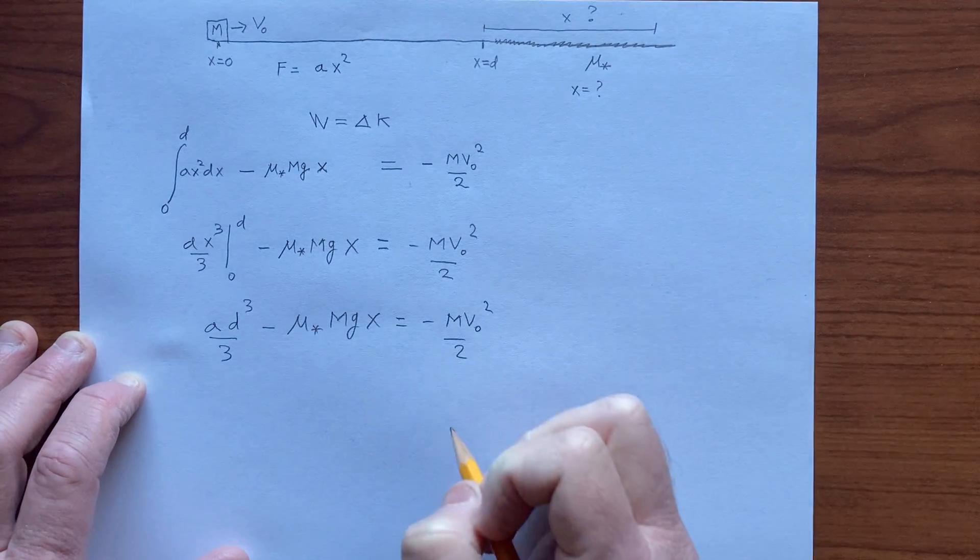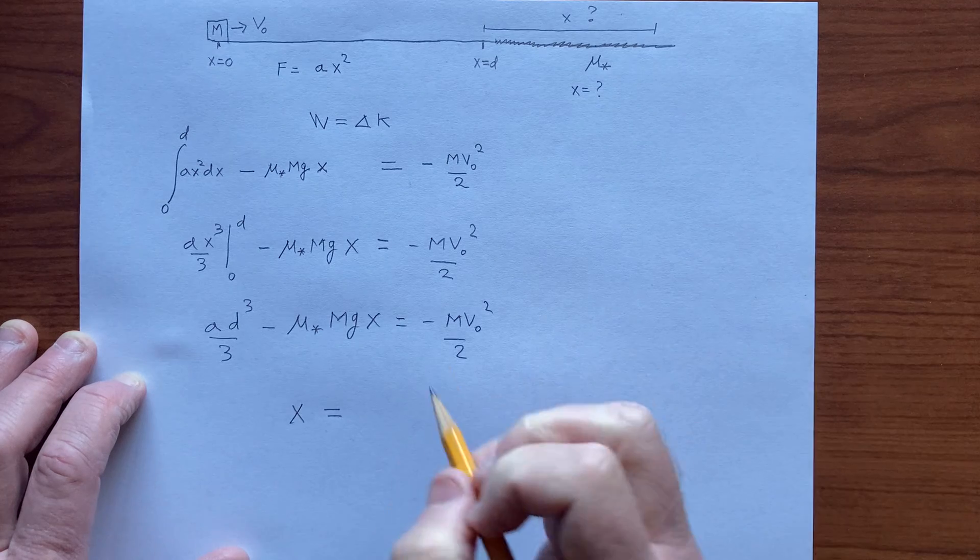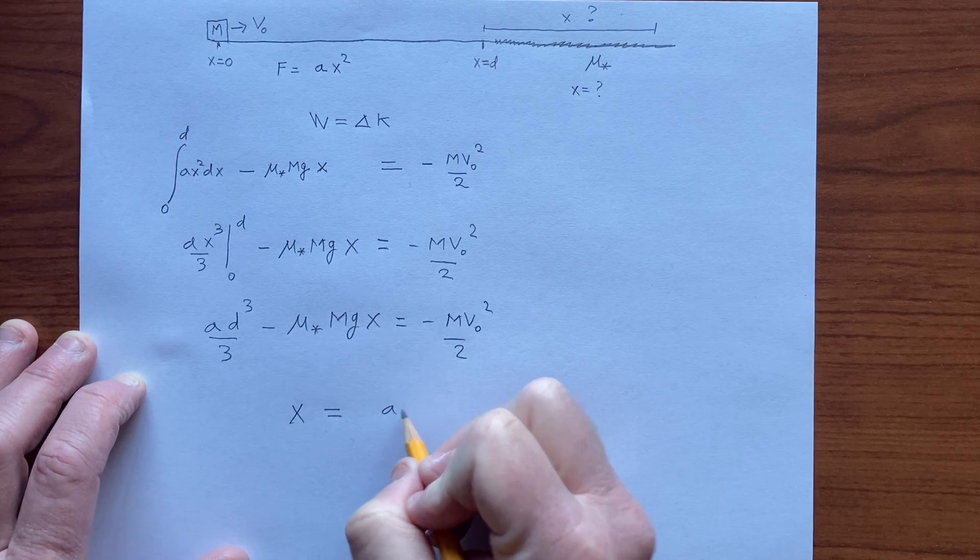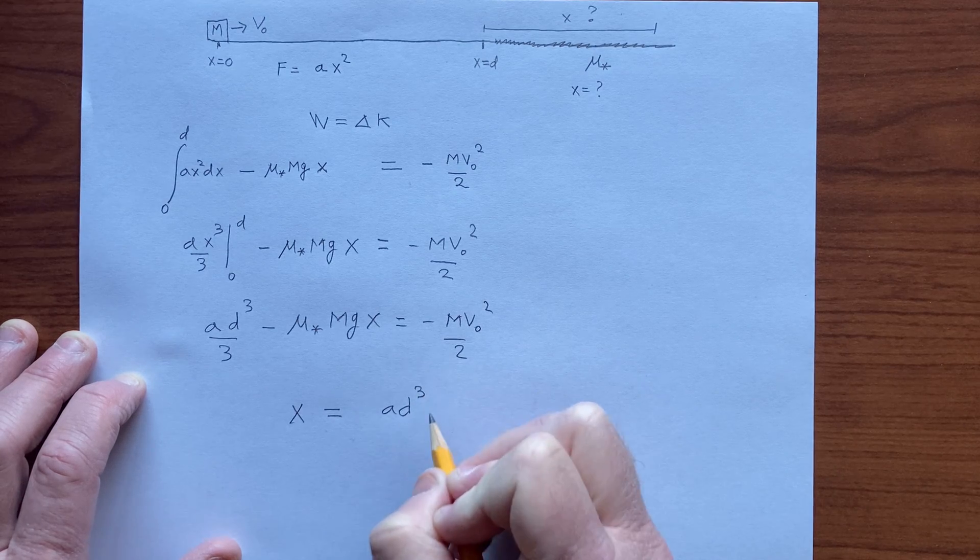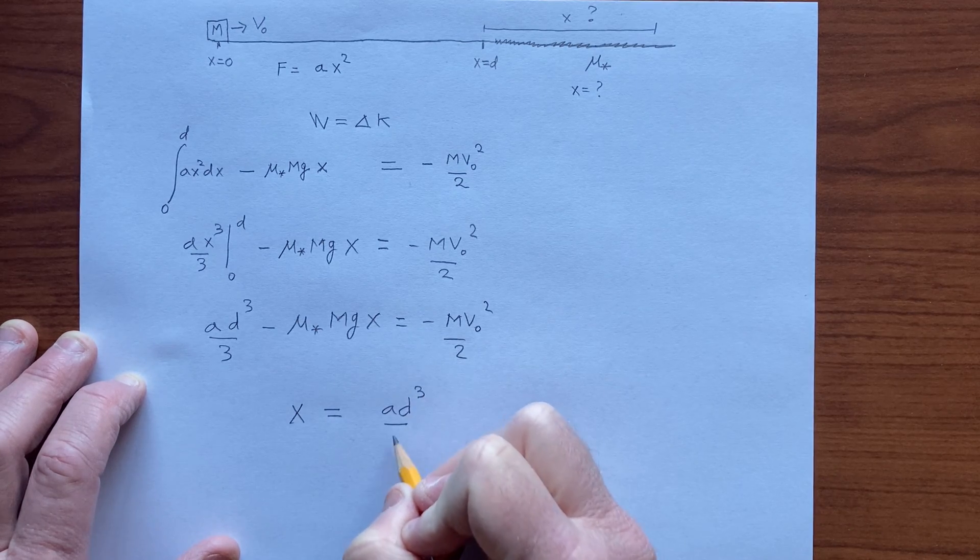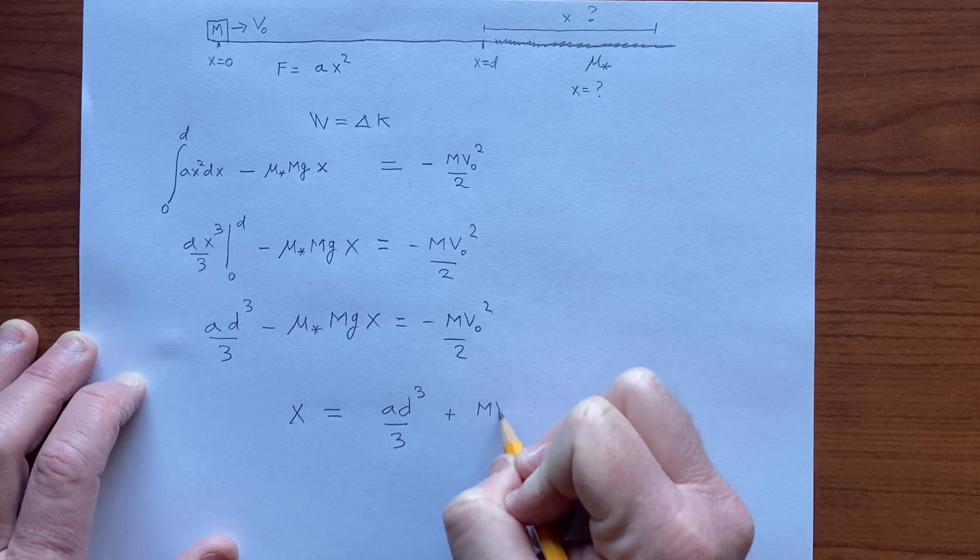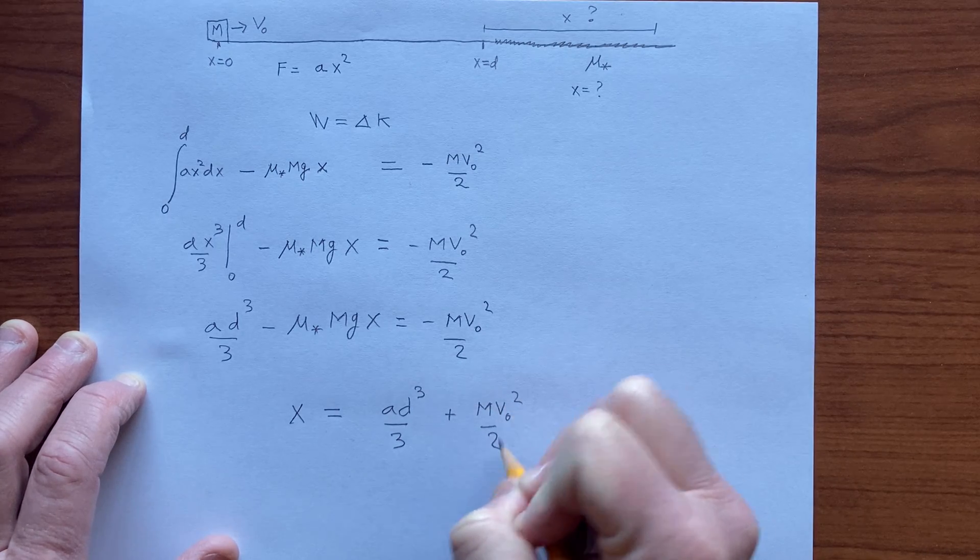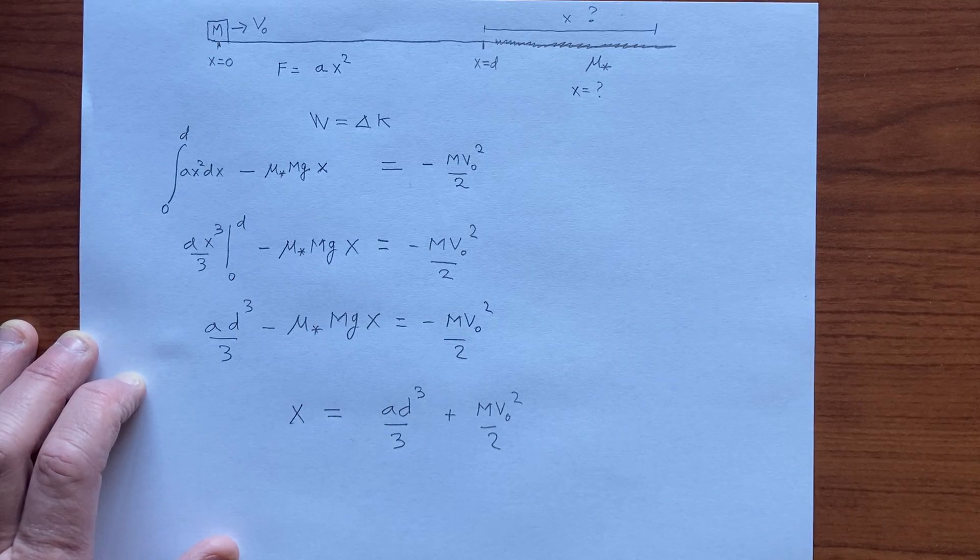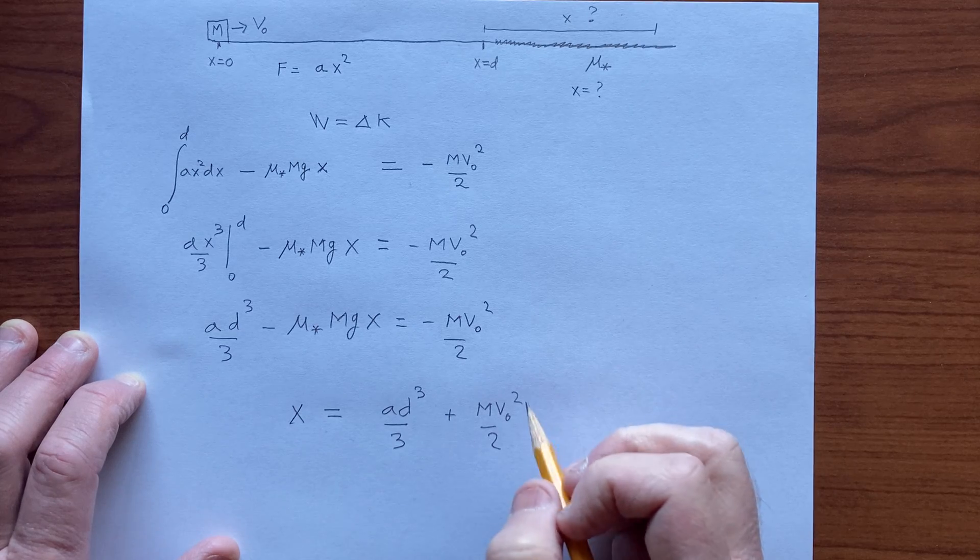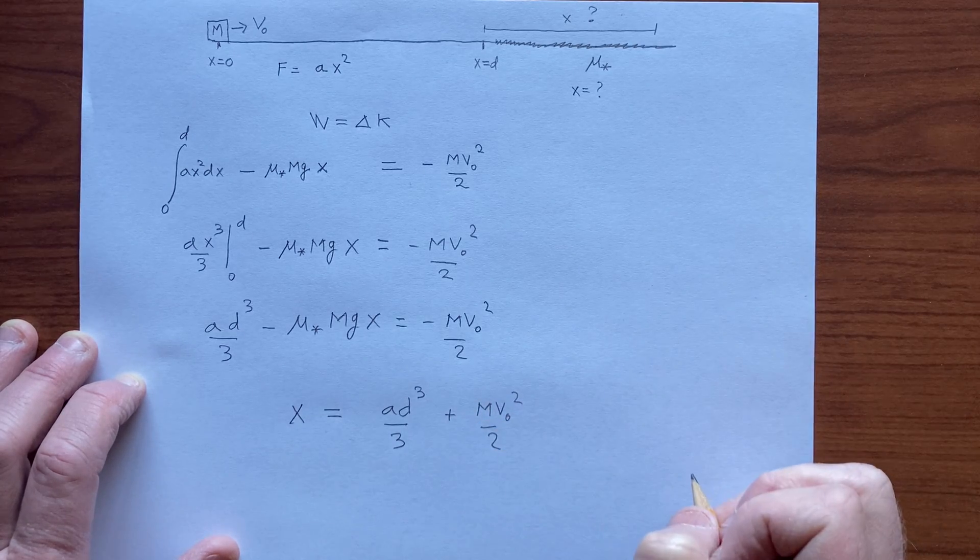So we can solve for x. We have a d cubed over 3 and m v-naught squared over 2, which we bring to this side. We divide both by mu star mg.